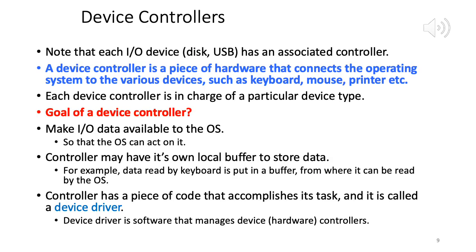Now on slide 9: 'Device Controllers.' For each kind of device attached to the system there is an associated device controller. This device controller is a piece of hardware whose main job is to connect the operating system to the various devices — mouse, keyboard, printer, etc. must all be appropriately linked to the OS. Each device controller is in charge of a particular device, and its goal is to make IO data available to the OS.